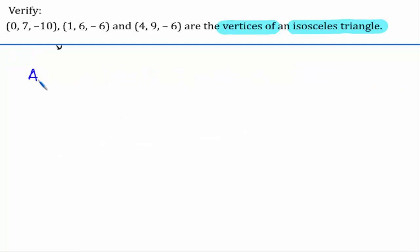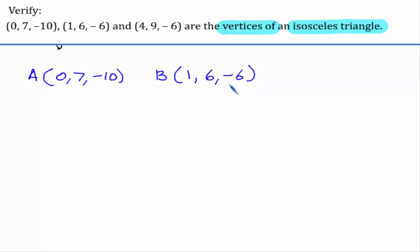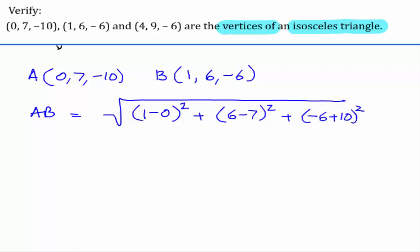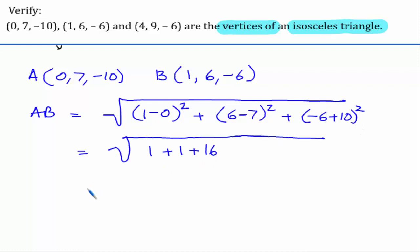Let us consider the first two points: A is (0, 7, -10) and B is (1, 6, -6). Finding distance AB: (1 minus 0) whole square plus (6 minus 7) whole square plus (minus 6 plus 10) whole square. Here we get 1 plus 1 plus 16, which is square root of 18. This is 3 root 2 units.